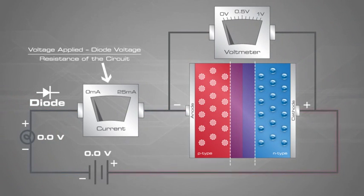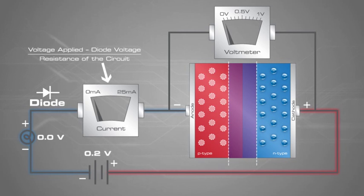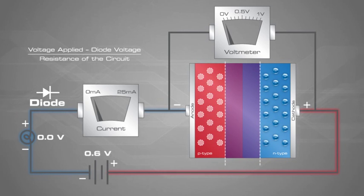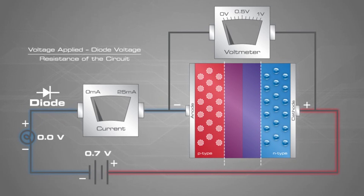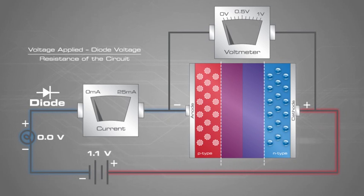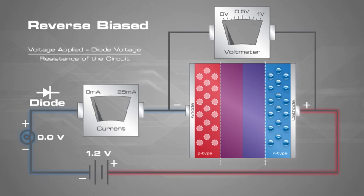In this example, the battery is connected so the negative terminal connects to the p-type silicon, and the positive terminal connects to the n-type silicon. The negative terminal attracts the positive holes in the p-type silicon, and the positive terminal attracts the free electrons in the n-type silicon. All the charge carriers are pulled away from the p-n junction, which essentially creates a larger depletion zone and no current flows.